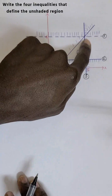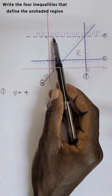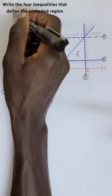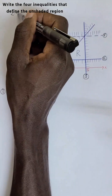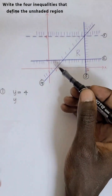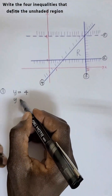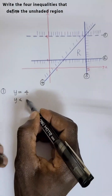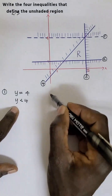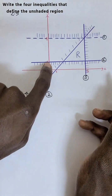This line is dotted. Because the line is dotted, we use strict inequality — less than or greater than only. Since we are looking for something below, we say y is less than four. And you are done with the second line.